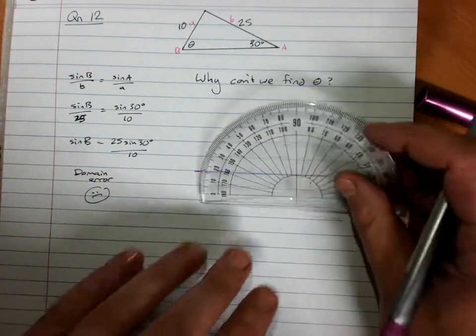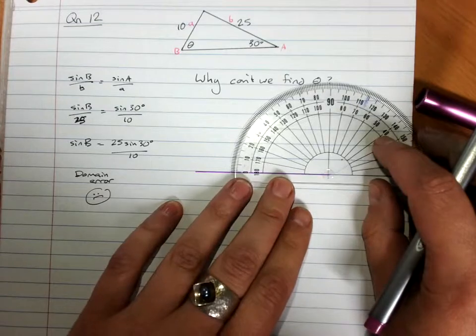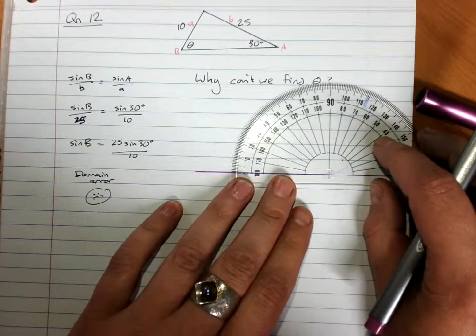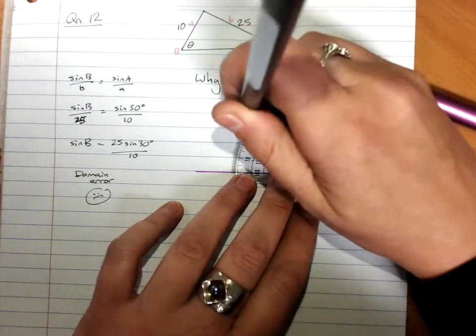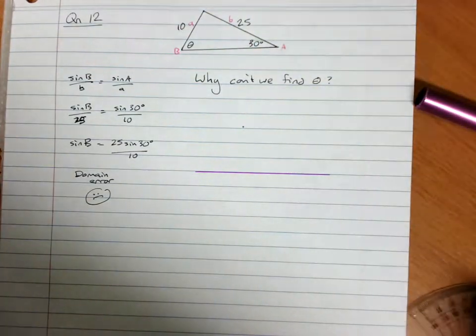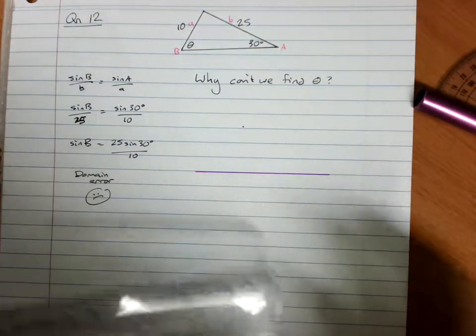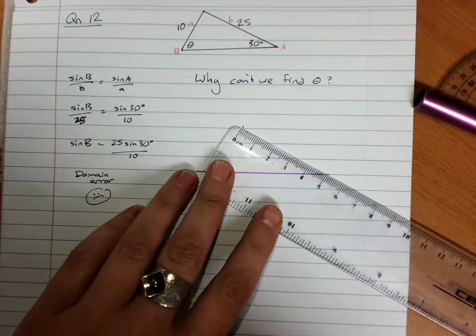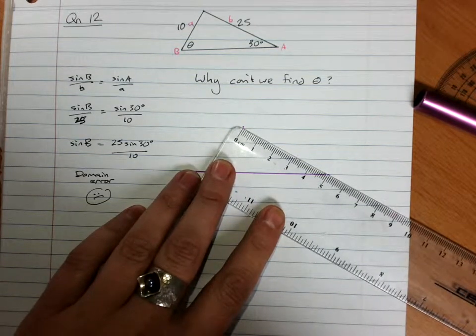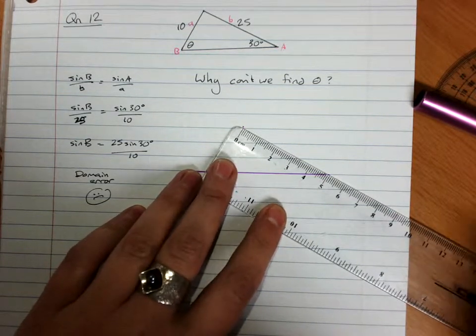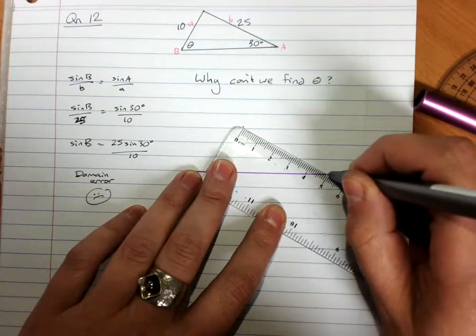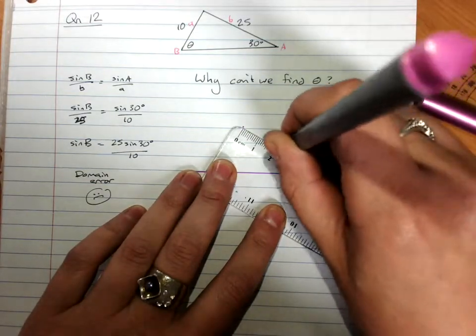We need a 30 degree angle. That way, a side of 25, so we might as well go for 25 millimeters, because that'll work reasonably well. 25.